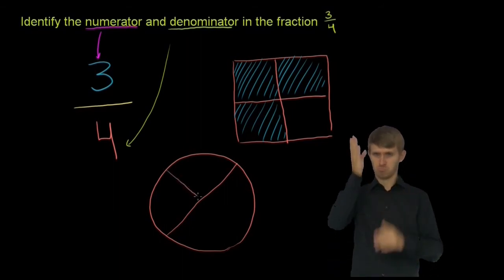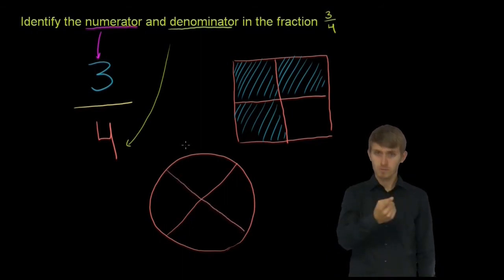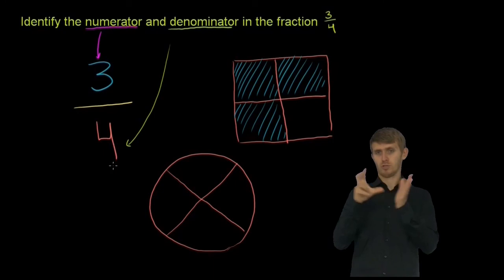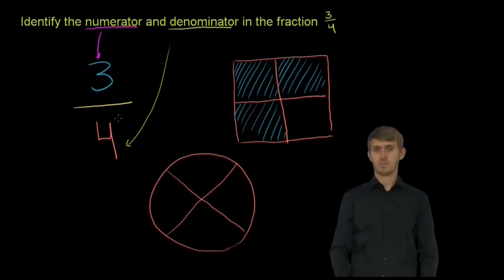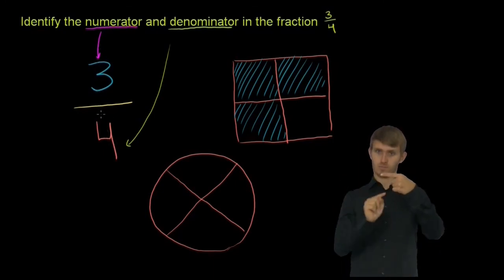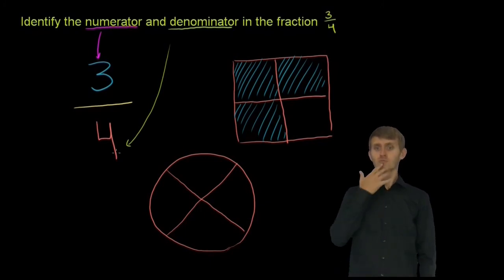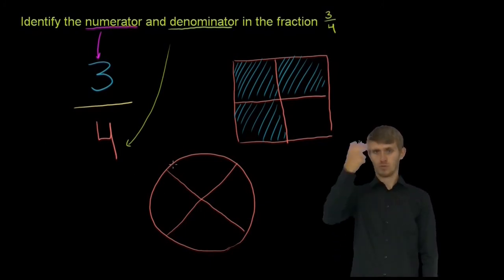And if someone says, I ate 3 fourths of this pie, where the 3 is the numerator and the 4, and you'd read that as 3 fourths. The 4 is the denominator. They would eat this much of the pie. They would eat 3 of the 4 pieces.